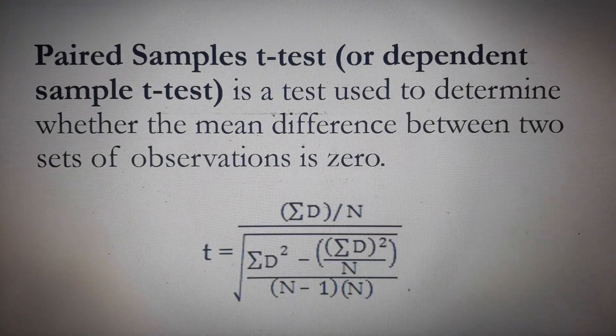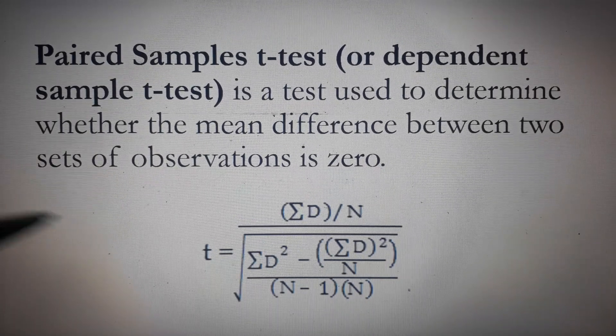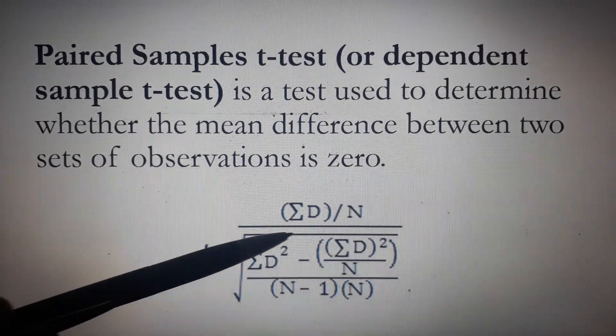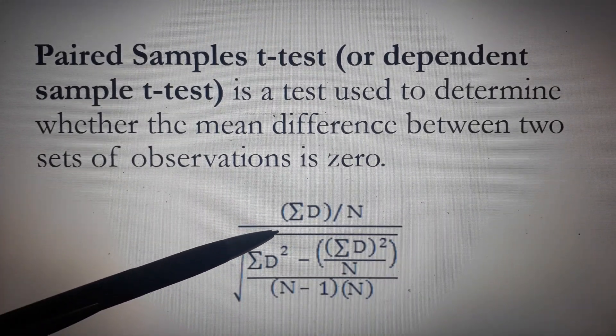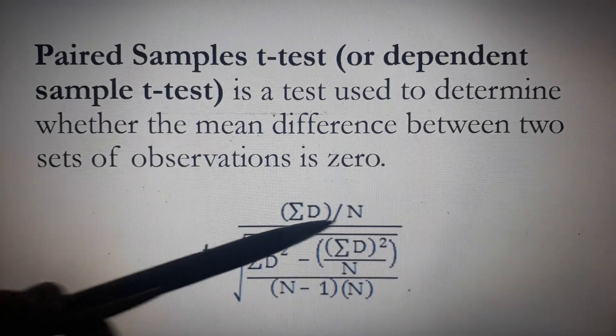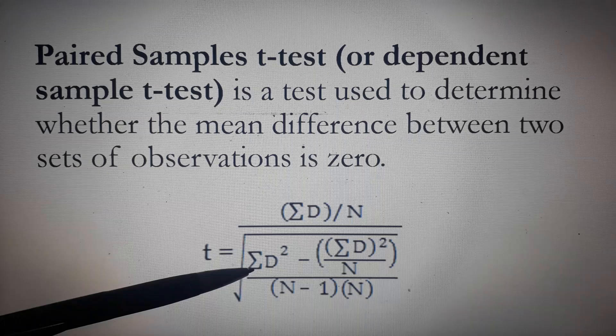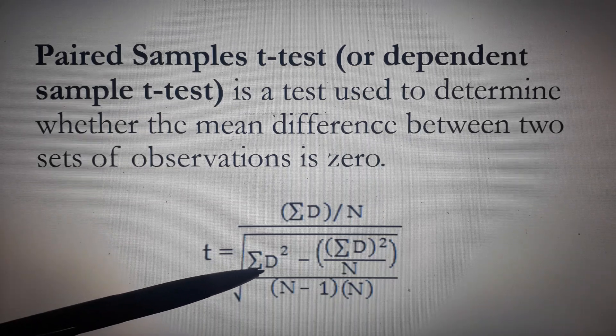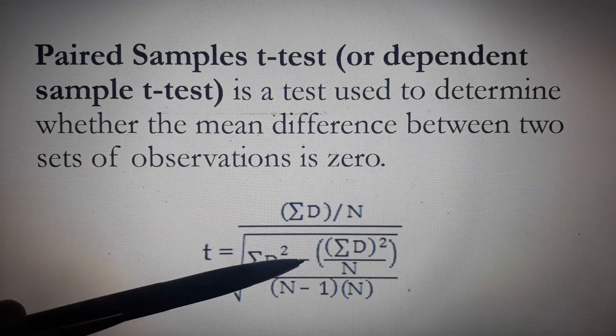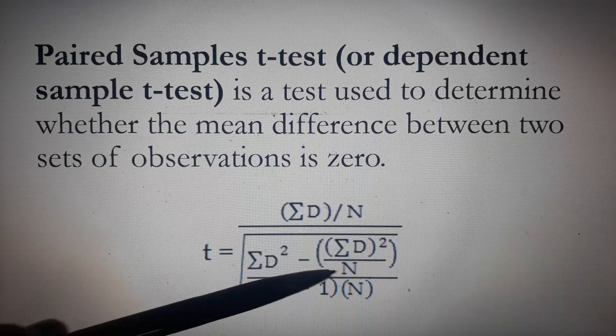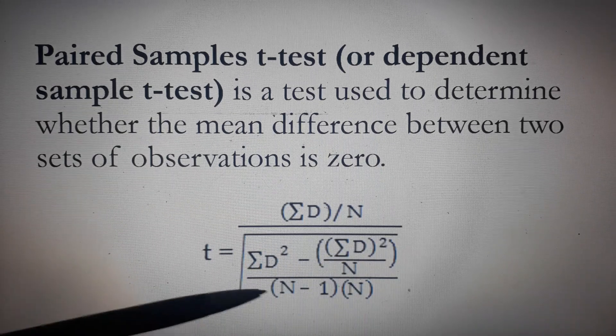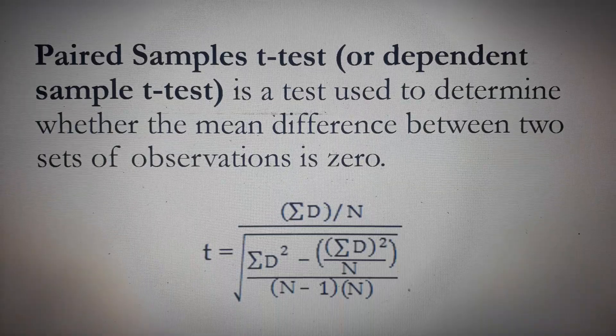The equation to be used is t equals the distance for the difference. So, the sum of the difference over the n all over square root of the quantity summation d squared minus summation of d, you have to square over n, all over n minus 1 times n.